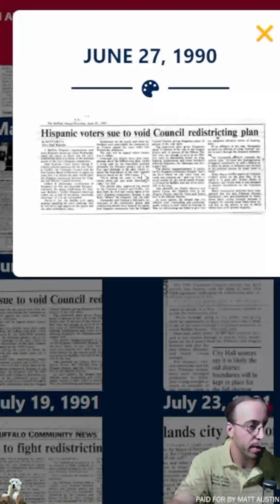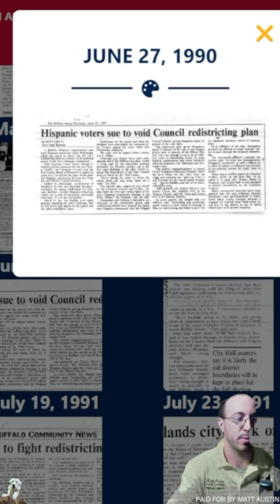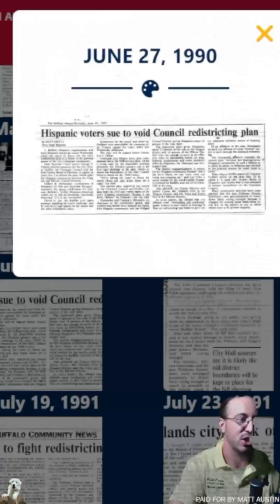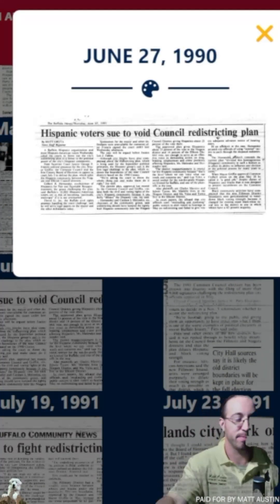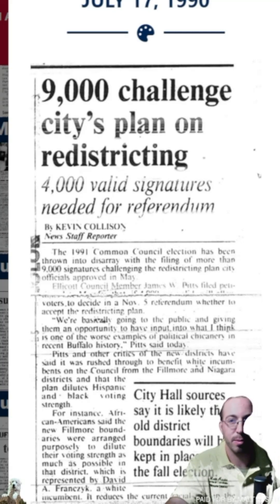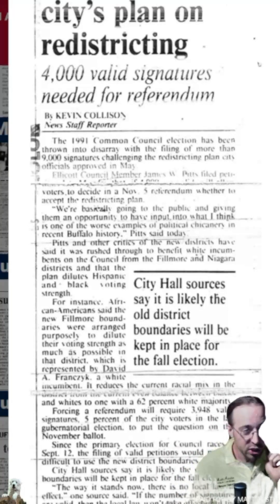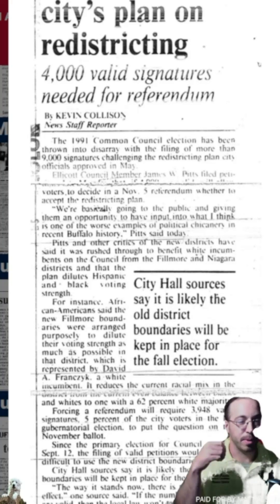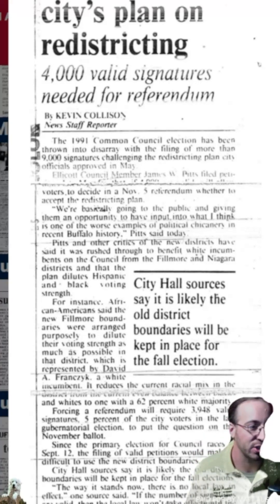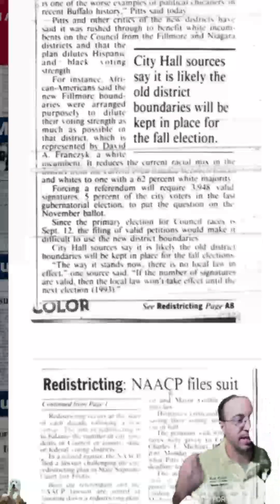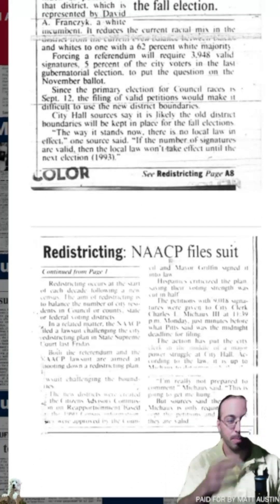On June 27th, Hispanic voters sued the council to void the adopted redistricting plan. Eventually the NAACP came in and sued as well. All these competing factions were suing during primary season. Then on July 17th, James Pitts threw the 1991 Common Council election into disarray — 20 minutes before the deadline, around 11:39, he filed a petition with 9,000 signatures challenging the redistricting plan. A referendum at that time only required 3,900 votes — 5% of the voting electorate — and the NAACP filed a lawsuit at the same time.